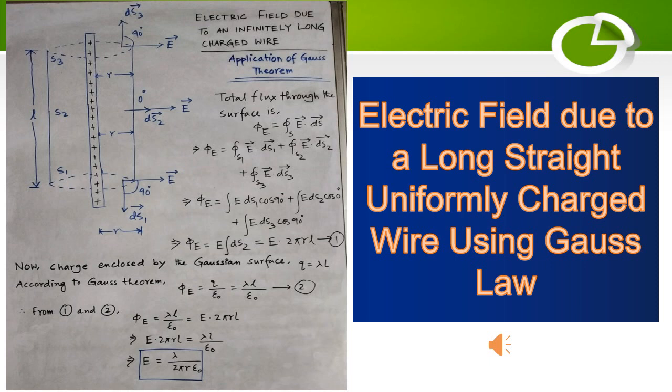Now E dot ds1 is in vector form. We know from the basic fundamentals of vectors that A dot B is AB cos theta, so obviously we can write E ds1...